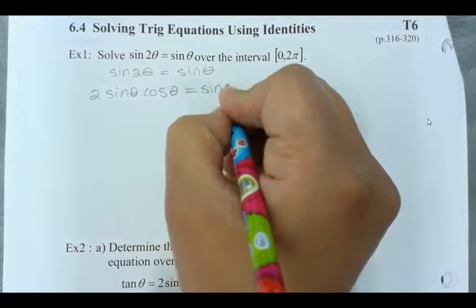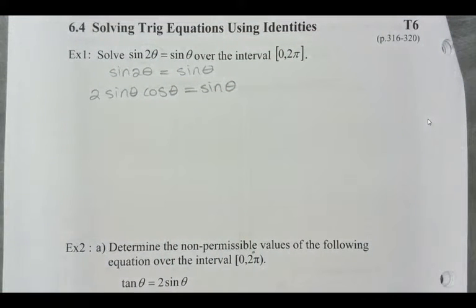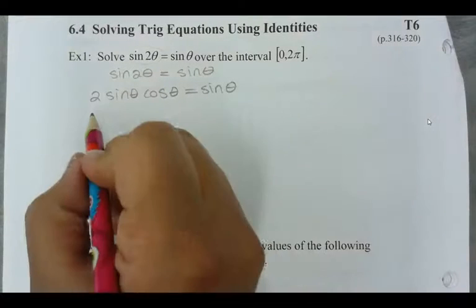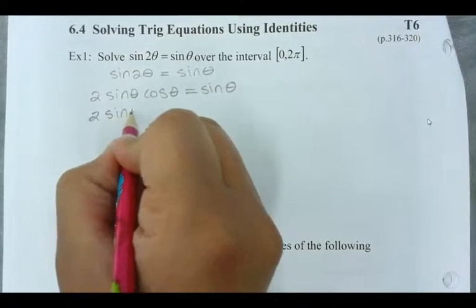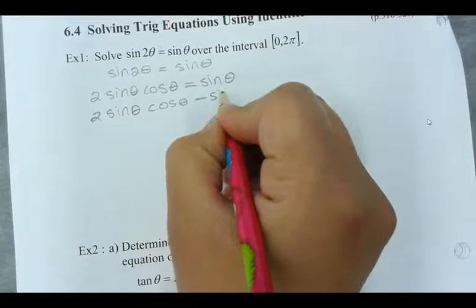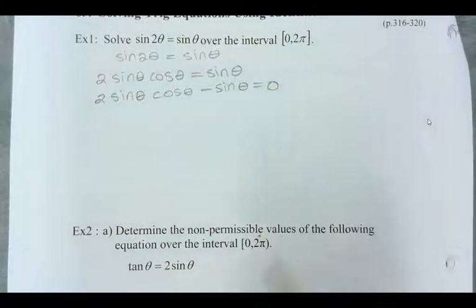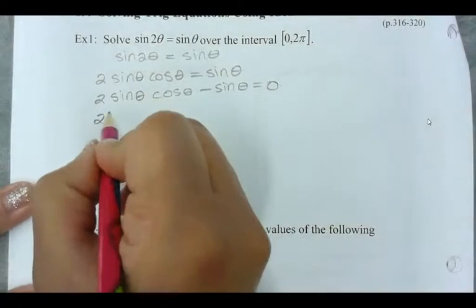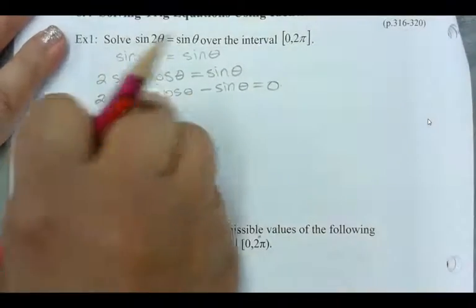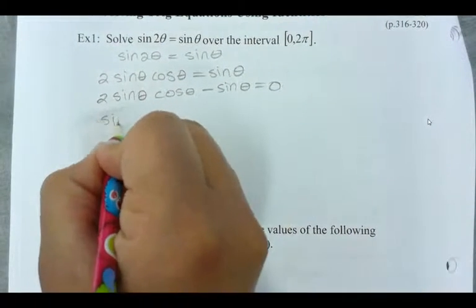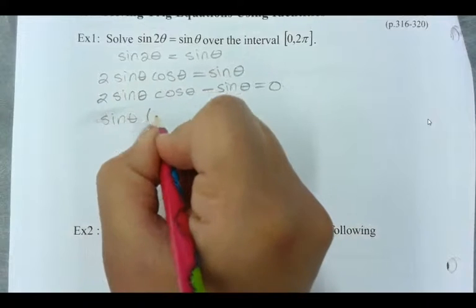To finish off our equation there. Now, when you're solving these types of equations, do not ever divide anything out. You have a sine theta on both sides of the equal sign, but you never want to divide it out. Because once you've divided sine theta out, it's basically gone. But that's one of the solutions that we need to find. So instead, you're going to move everything over to one side, set it equal to zero, and now what do you see can be done? You can factor.